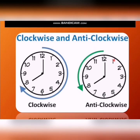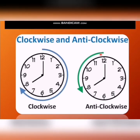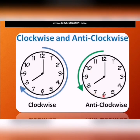Before explaining turns and right angles, I need to explain clockwise and anti-clockwise rotation. Here we have a clock. Clockwise rotation moves from 12 to 1, then 3, 4, 5, 6, 7, 8. Anti-clockwise rotation is the reverse: from 12 to 11, then 10, 9, 8, 7, 6, 5.